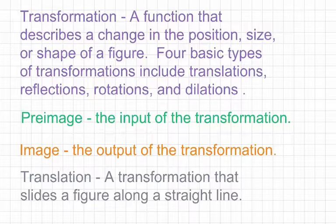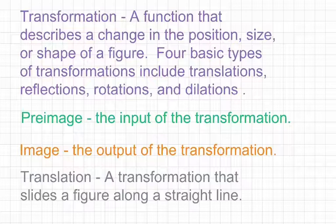And our last term before getting to some examples is the actual definition for our lesson today, which is translation. A translation is a transformation that slides a figure along a straight line. So picture any sort of figure, and you're just sliding it from one place to another. You're not twisting it. You're not rotating it. You're just moving it from one location to another. That's a translation.